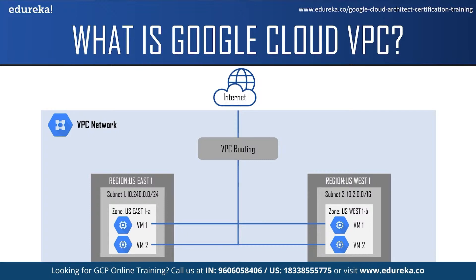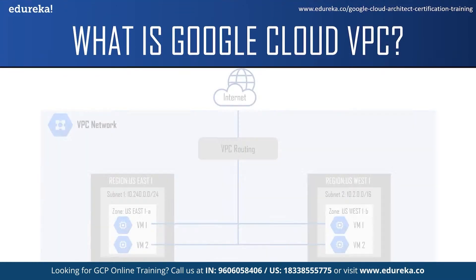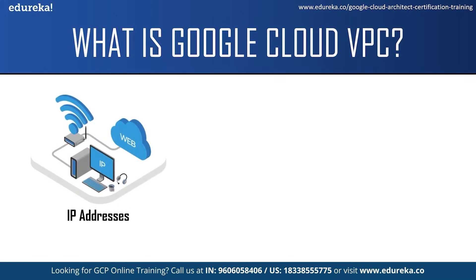Let us understand a few important concepts in VPC: IP addresses, routes, and firewall rules. Each virtual machine instance in GCP will have an internal IP address and typically an external IP address. The internal IP address is used to communicate between instances in the same VPC network, while the external IP address is used to communicate with instances in other networks or the internet. These IP addresses are ephemeral by default but can be statically assigned — ephemeral means the IP address will keep changing every time the virtual machine restarts.